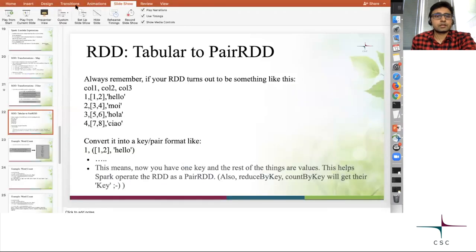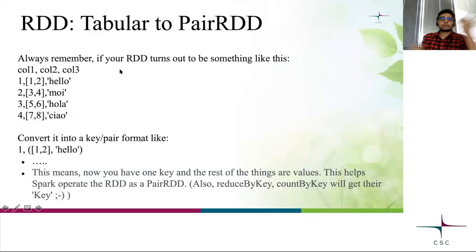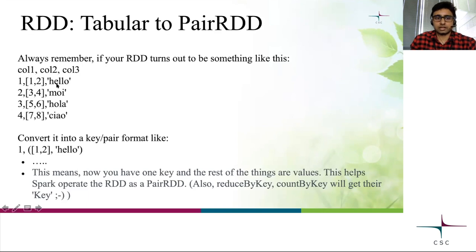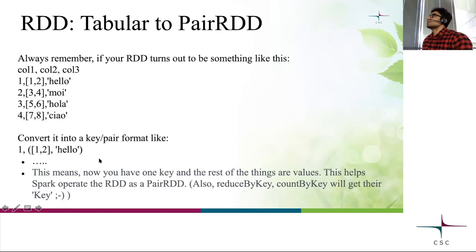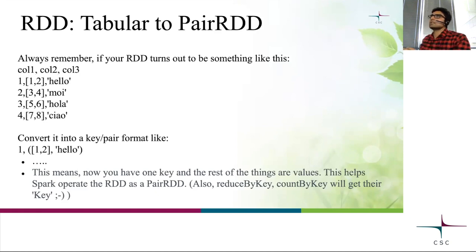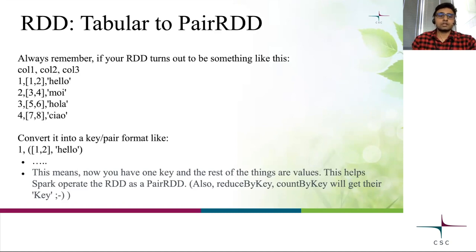Here is an important slide about how to convert a tabular RDD to a pair RDD. If you have an RDD with three elements per record, you should convert it to a key-value pair format. You keep the first element as the key and use the map transformation to convert the rest of the items into a tuple as the value. Once you have a key, you can use sort by key or reduce by key. Many transformations require you to have a pair RDD with a key.